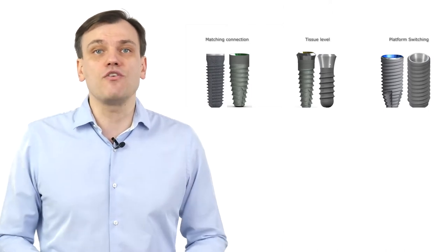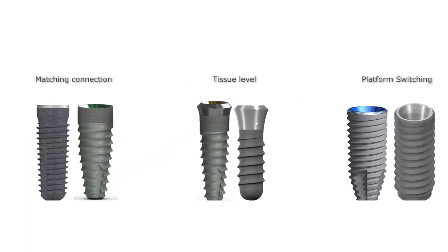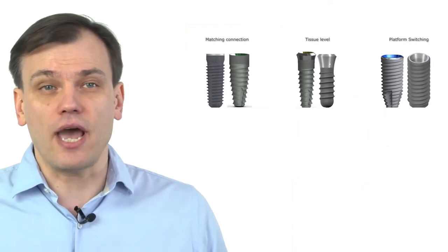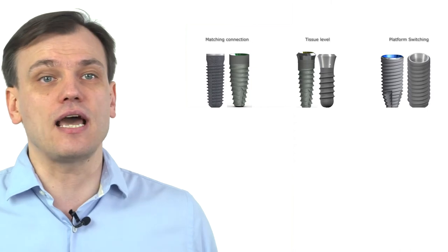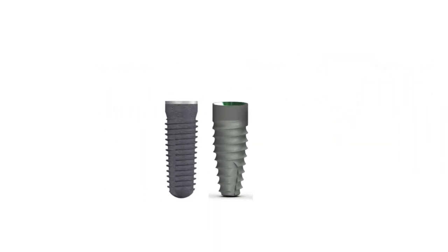The three types are: implants with matching connection — meaning no platform switching; tissue level implants, which usually have a high polished neck and again no platform switching; and platform switching implants with or without conical connection. These three types cover 99% of all implants currently sold on the market.